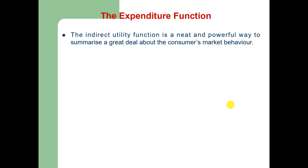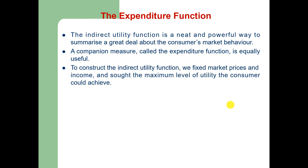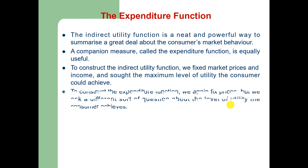The indirect utility function, discussed in the previous video (video number 439), was a neat and powerful way to summarize a great deal about the consumer's market behavior. A companion measure called the expenditure function is equally useful. To construct the indirect utility function we fixed market prices and income and found the maximum level of utility the consumer could achieve. To construct the expenditure function we again fix prices but ask a different sort of question about the level of utility the consumer achieves.